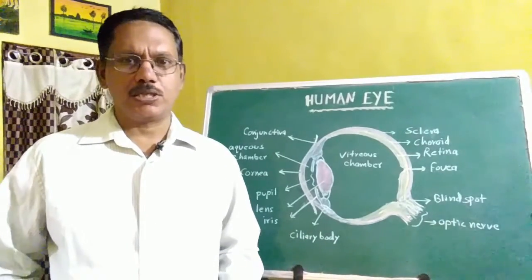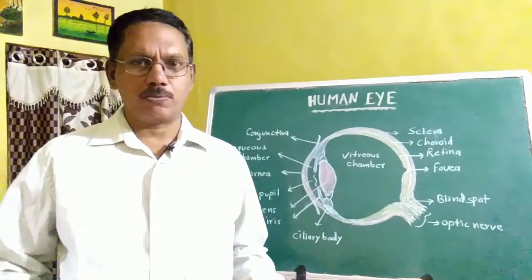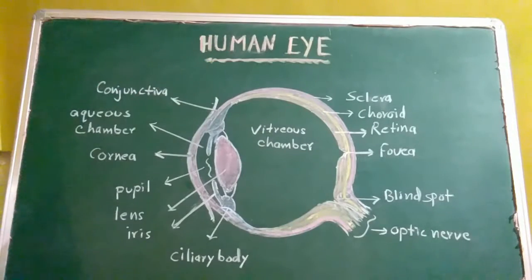Welcome to Octodest channel. In this session I am going to teach about the structure of human eyes. The organs of sight are a pair of eyes. Study of structure, functions and diseases of the eye is called ophthalmology.